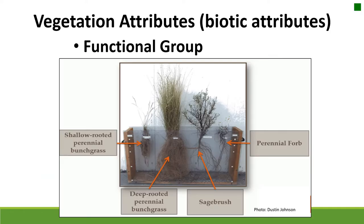Functional groups are a type of vegetation attribute we measure quite a bit in rangelands. When we collect plant species data, we often group it into functional groups. Basically, functional groups describe how plants function on the landscape — where they get their water, how they cycle nutrients, and whether they respond similarly to disturbance or management. Plants that are functionally similar are grouped together because they'll respond similarly on the landscape.